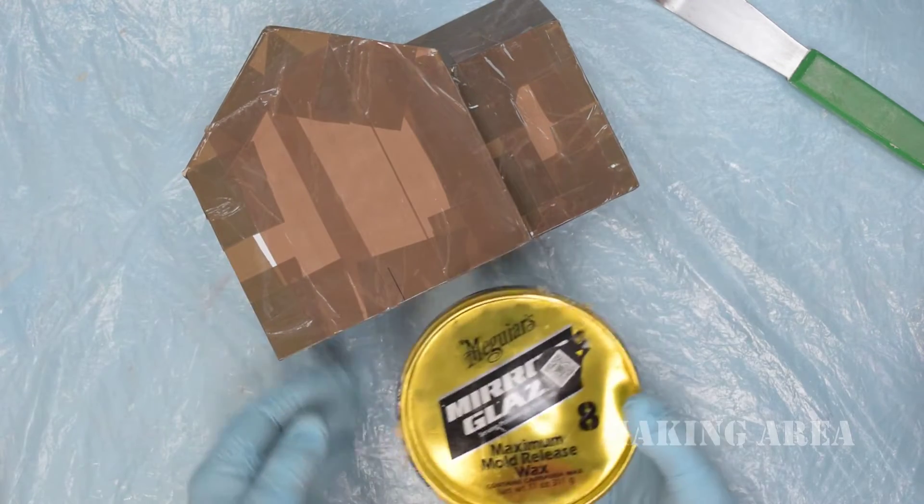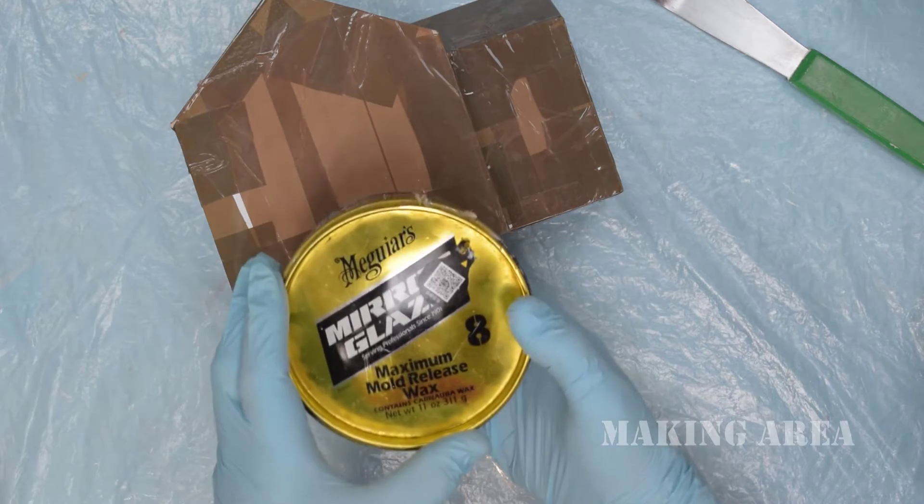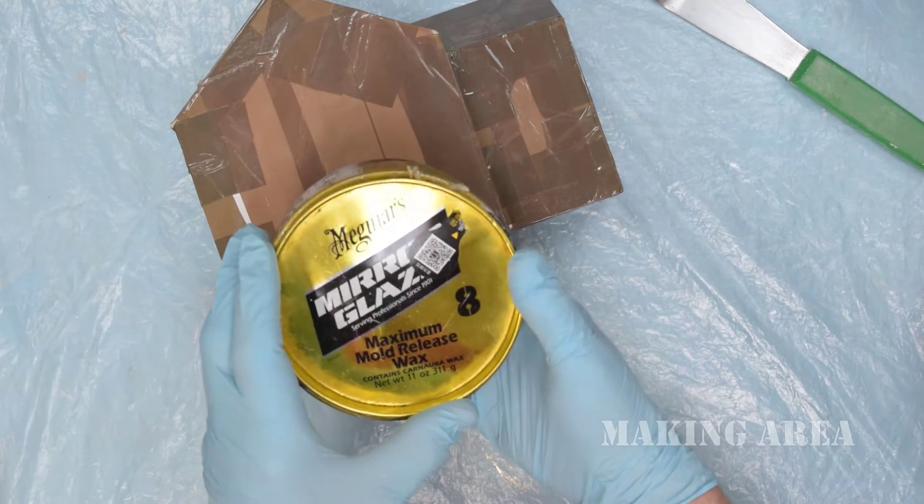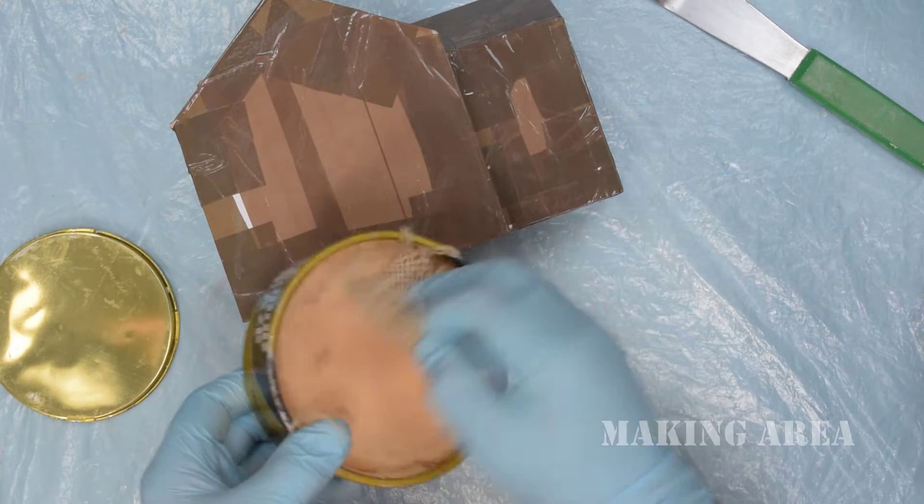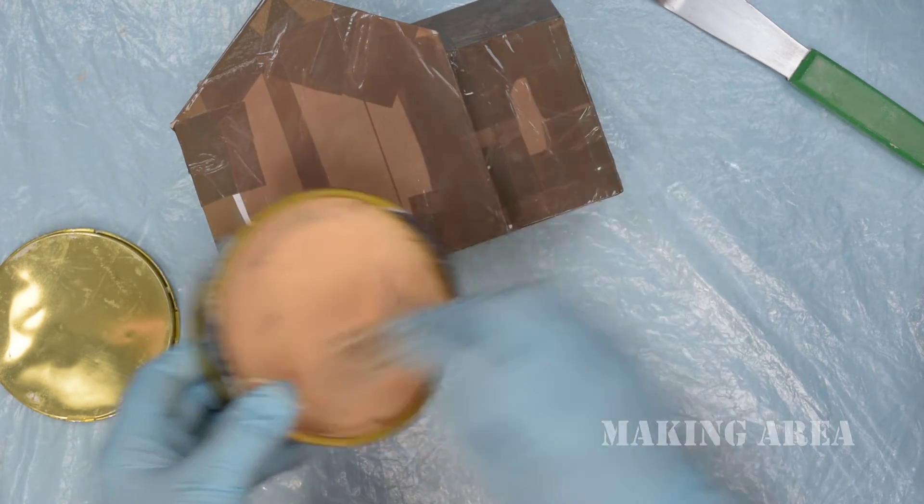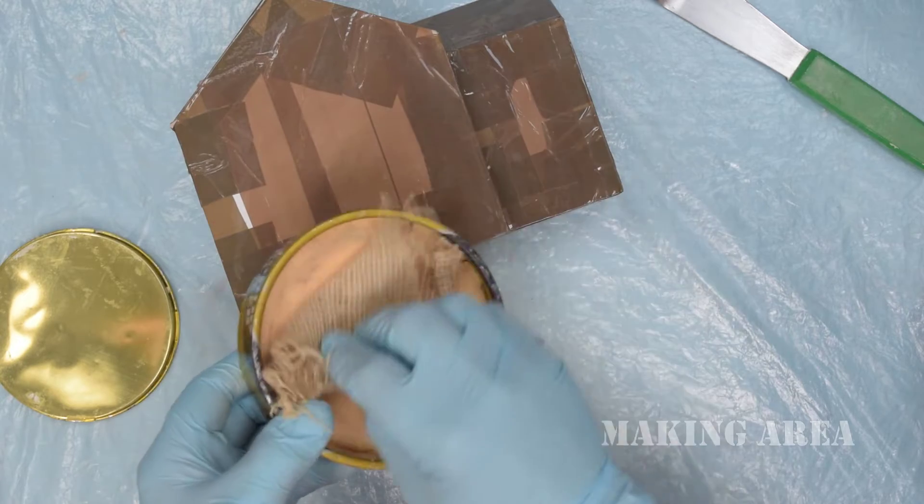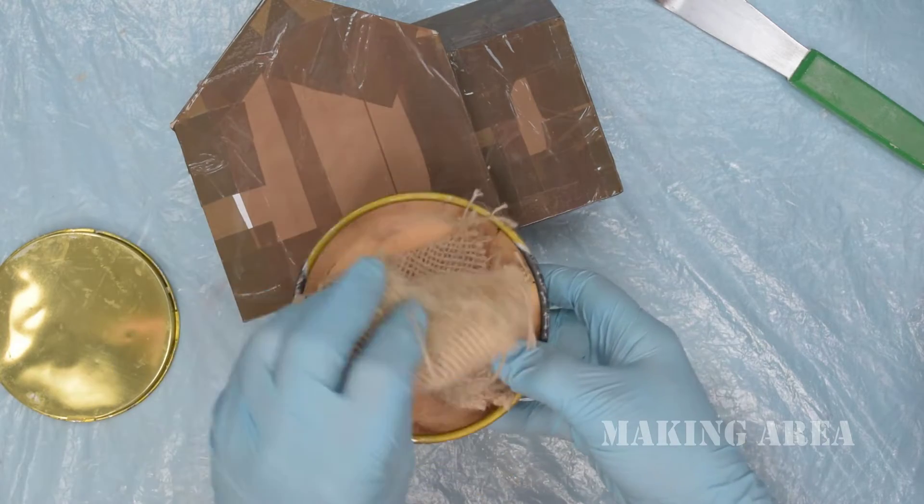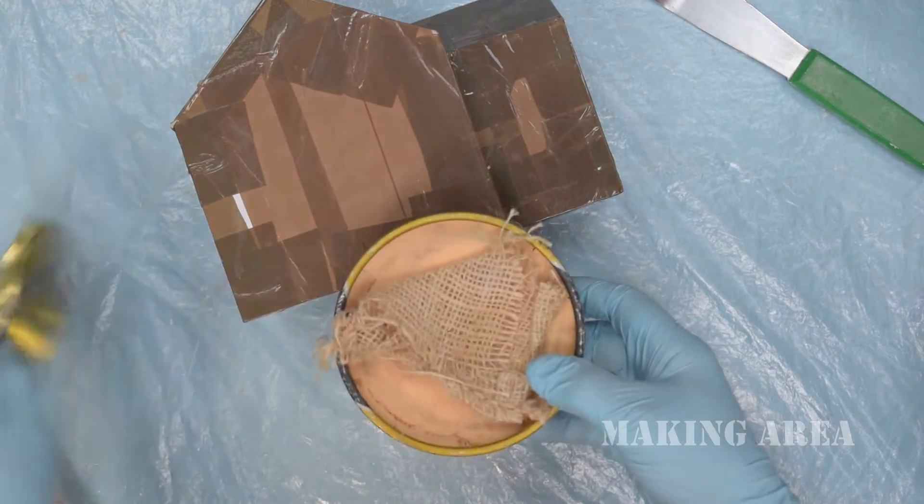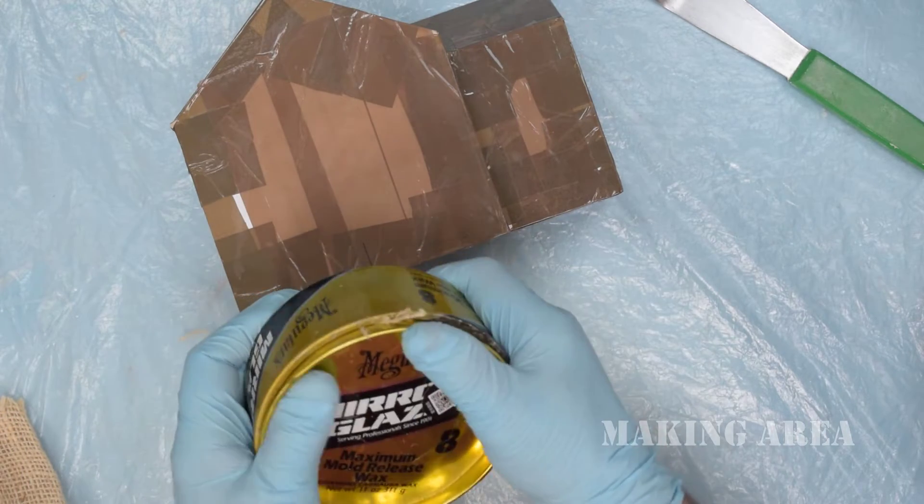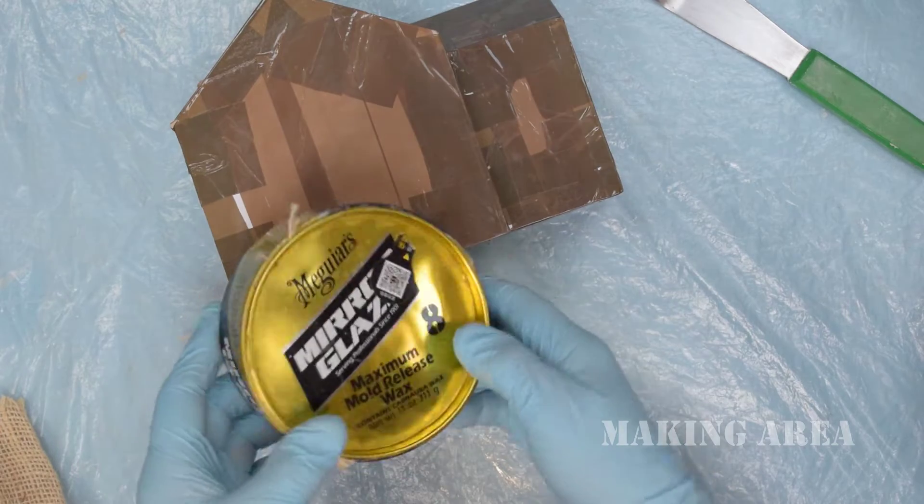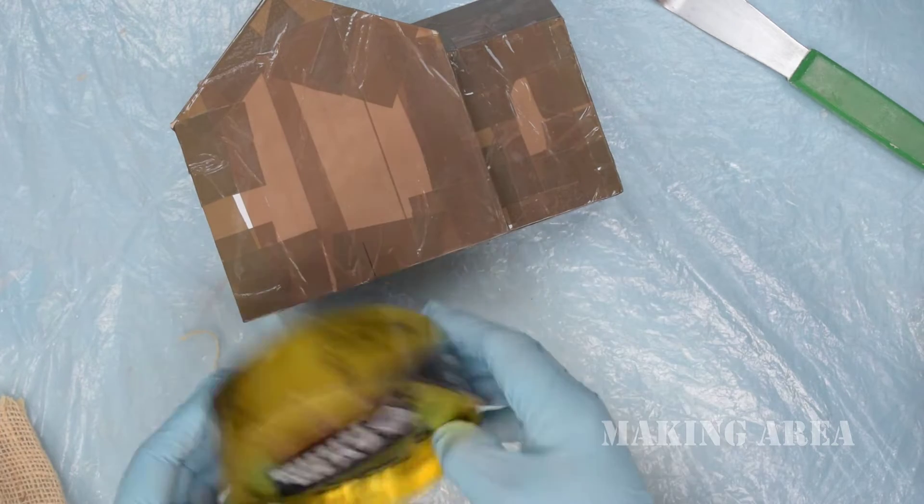I've already coated the inside with mold release wax. You get a soft cloth, wipe all the inside with it, and buff it out. I'm wearing nitrile gloves because this smells very nice but it's not very good for you, so it's best not to get it on your hands.